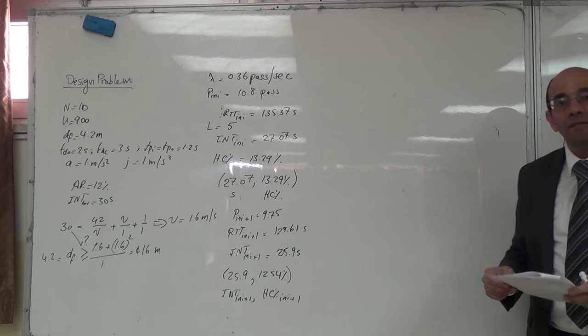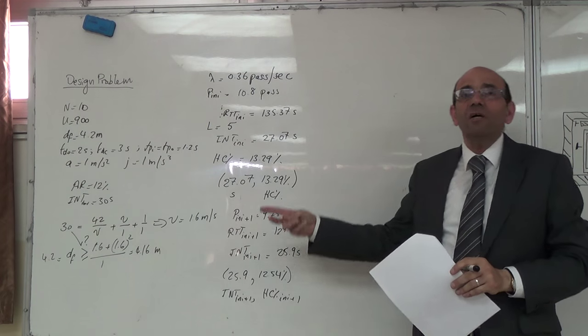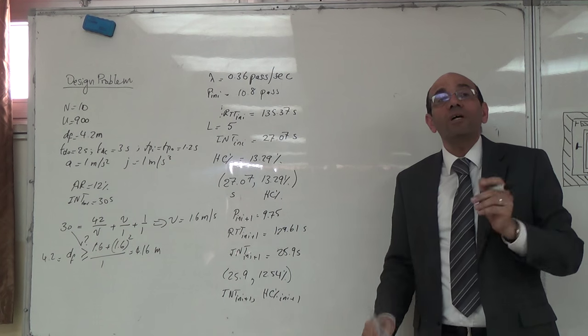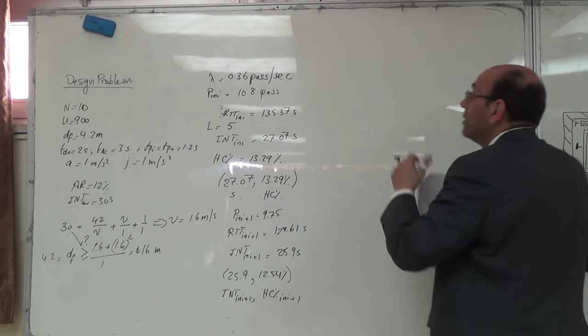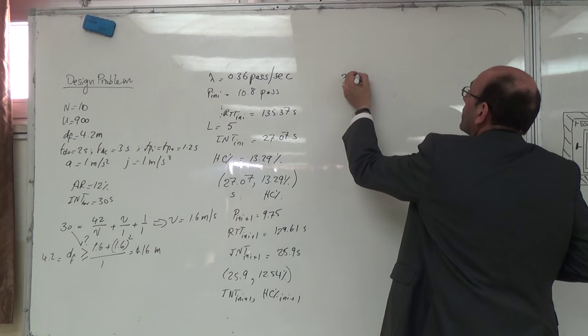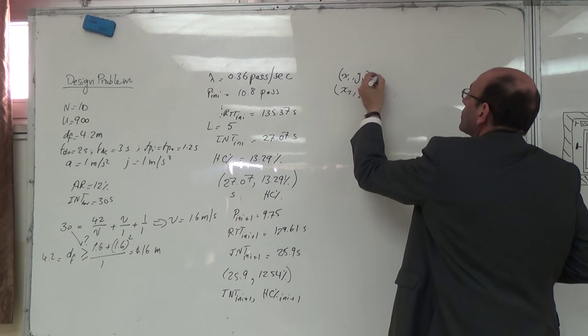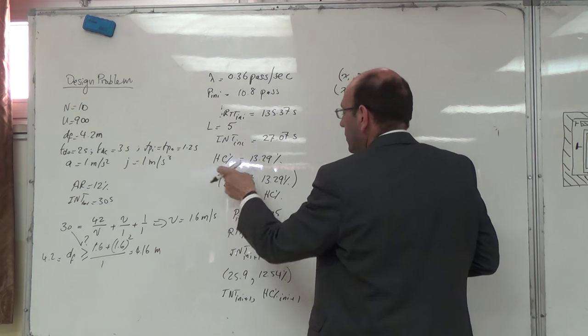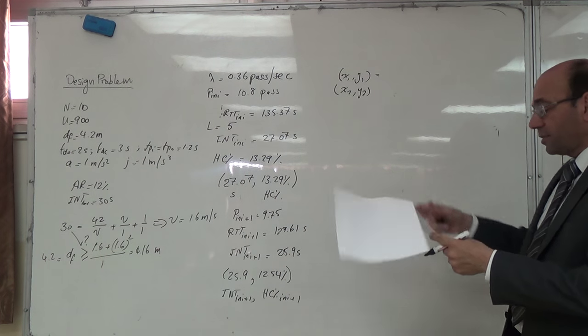صار عندي نقطتين إيش بقدر اعمل الان. بقدر اضل اعمل iteration وبحتاج حوالي خمس ست iteration حتى قدر اوصل لهاي او برسم خط مستقيم بمر في النقاط. هاي هم النقطتين فصار عندي x1 y1 عندي نقطة x2 y2. عندي نقطة x1 y1 اللي هي هاي و x2 y2 اللي هي هاي بتطلع معي معادلة الخط المستقيم.